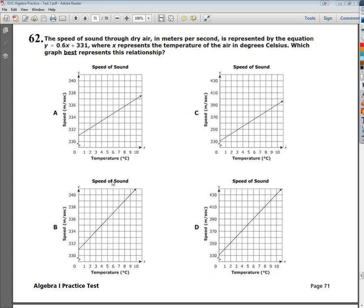The question says, the speed of sound through dry air in meters per second is represented by the equation y equals 0.6x plus 331, where x represents the temperature of the air in degrees Celsius. Which graph best represents this relationship?